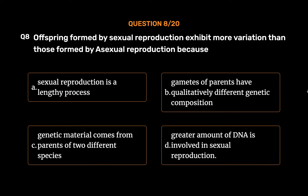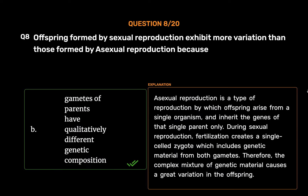The correct answer is Option B: Gametes of parents have qualitatively different genetic composition. Asexual reproduction is a type of reproduction by which offspring arise from a single organism and inherit the genes of that single parent only. During sexual reproduction, fertilization creates a single-cell zygote which includes genetic material from both gametes. Therefore, the complex mixture of genetic material causes a great variation in the offspring.